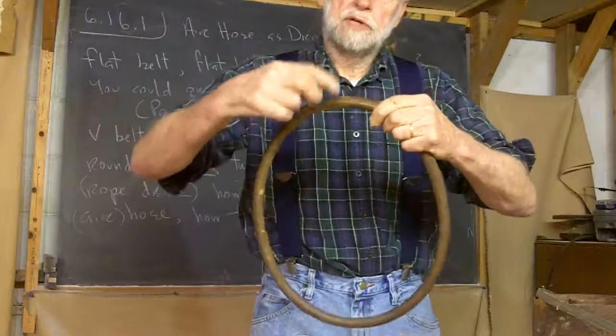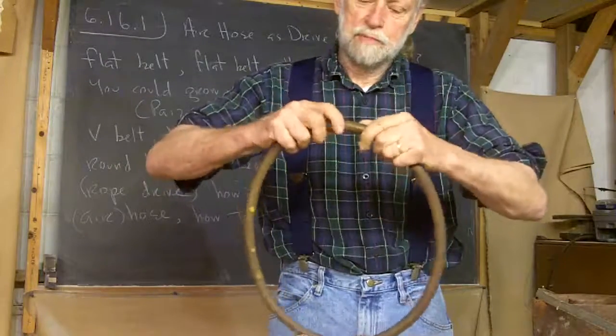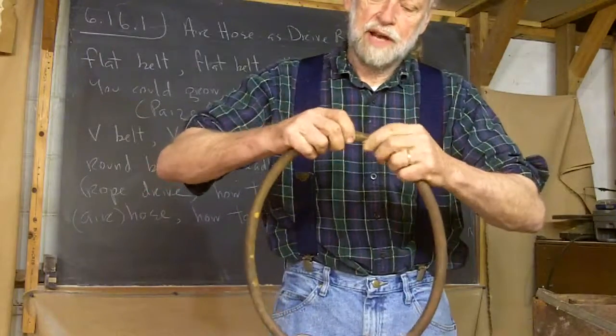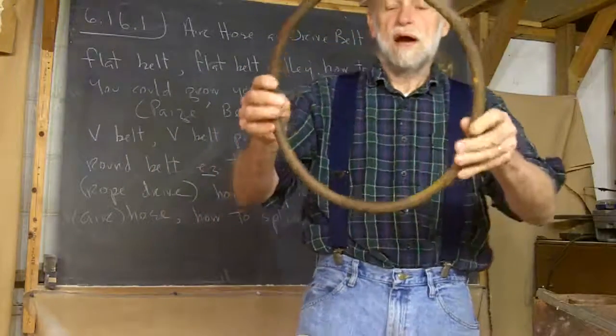And then what I haven't done yet is you could lash it with wire on either side, like lashing the end of a rope, something I learned in Boy Scouts. You could lash it and you could make it tight enough that it'd actually be stronger than the rest of the belt.